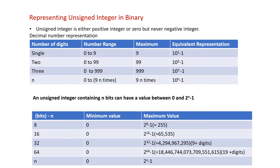Let us look at the first topic: representing unsigned integers in binary. Unsigned integers are nothing but 0 with all the positive integers. In decimal, for a single digit the maximum is 9, range is 0 to 9, equivalent representation is 10^1 - 1. For two digits, maximum is 99, range 0 to 99, equivalent is 10^2 - 1. For three digits, range is 0 to 999, equivalent is 10^3 - 1.